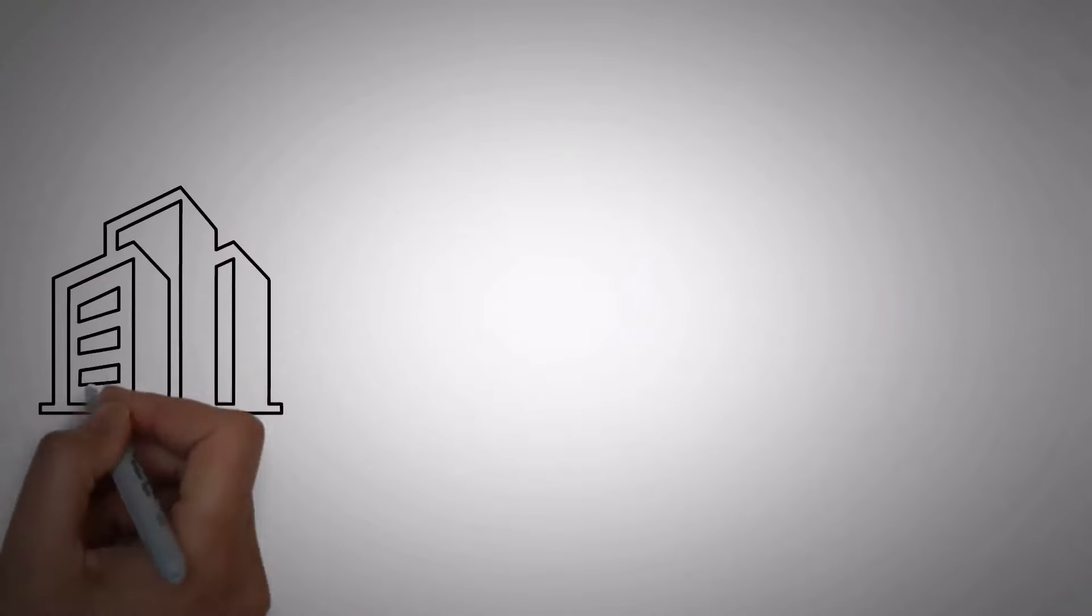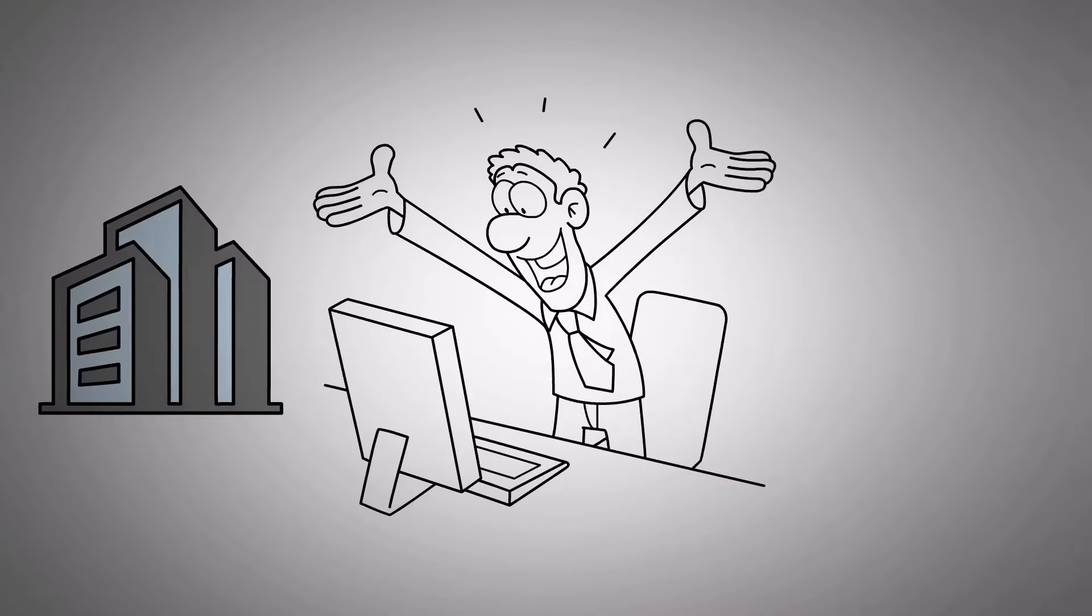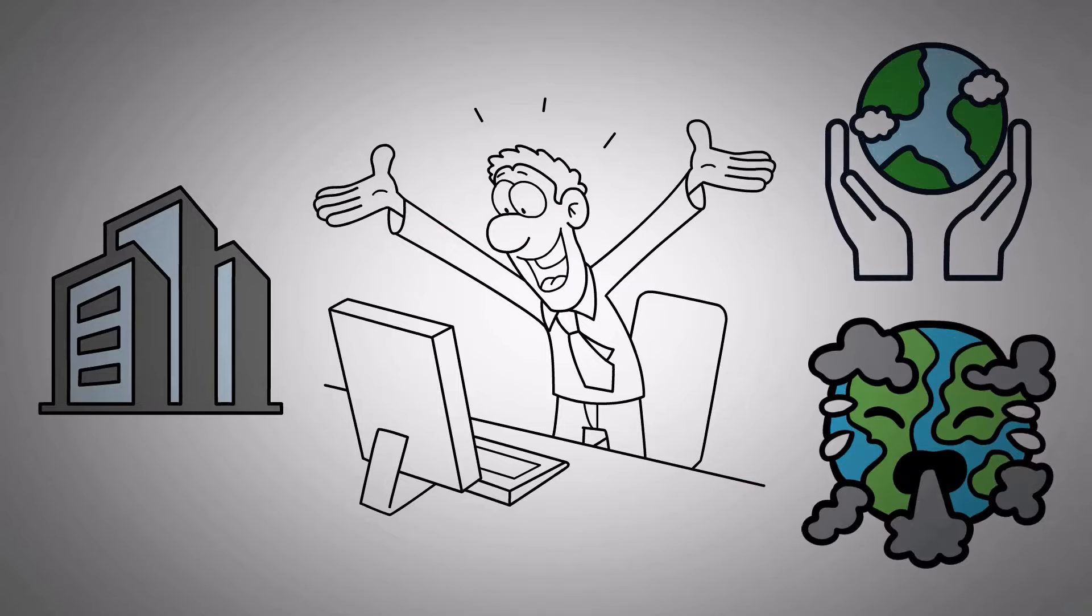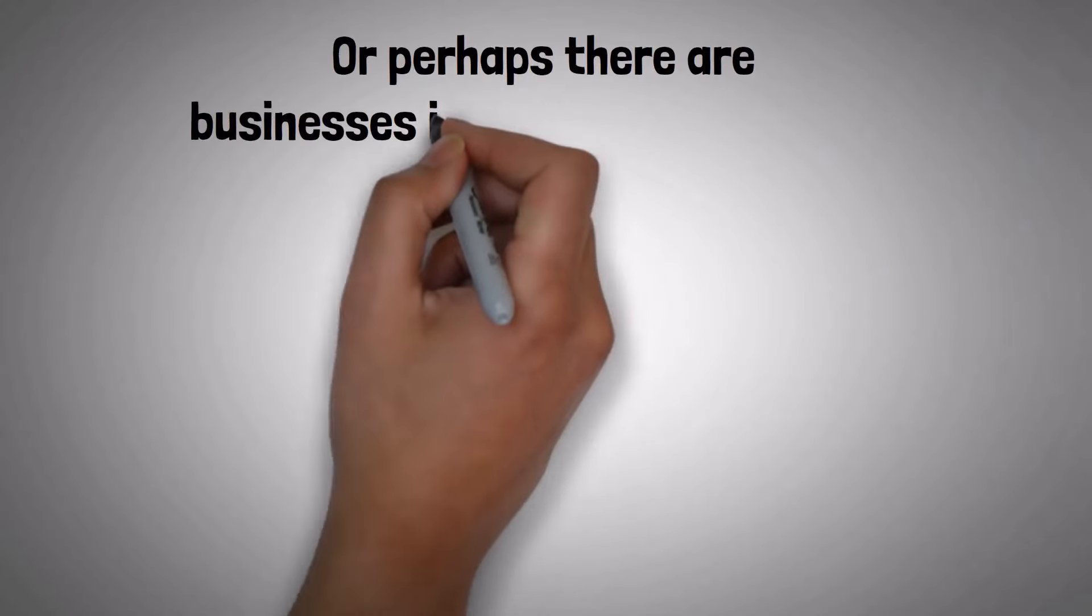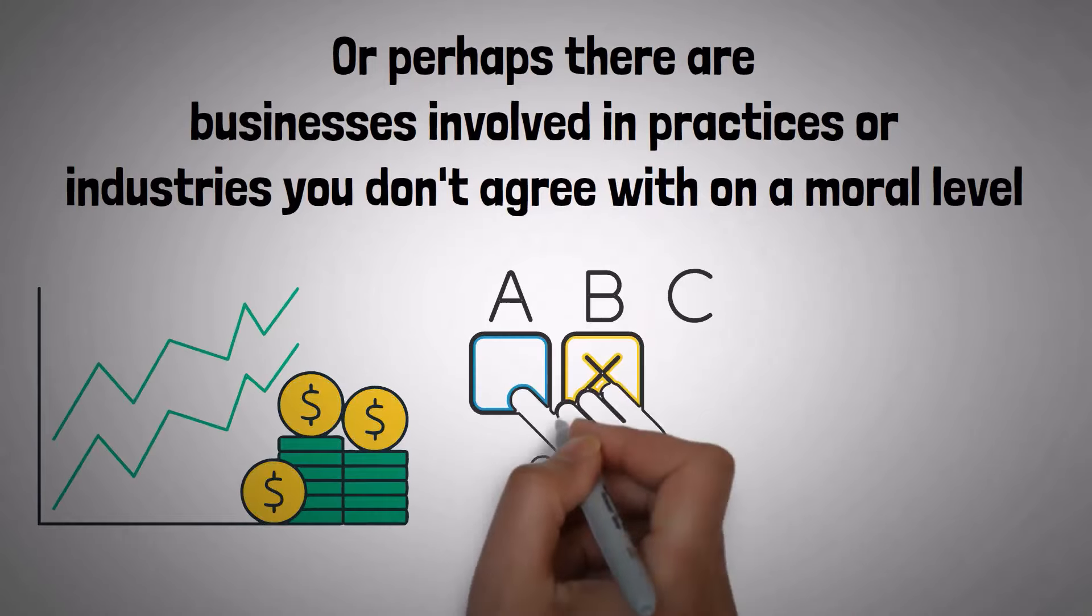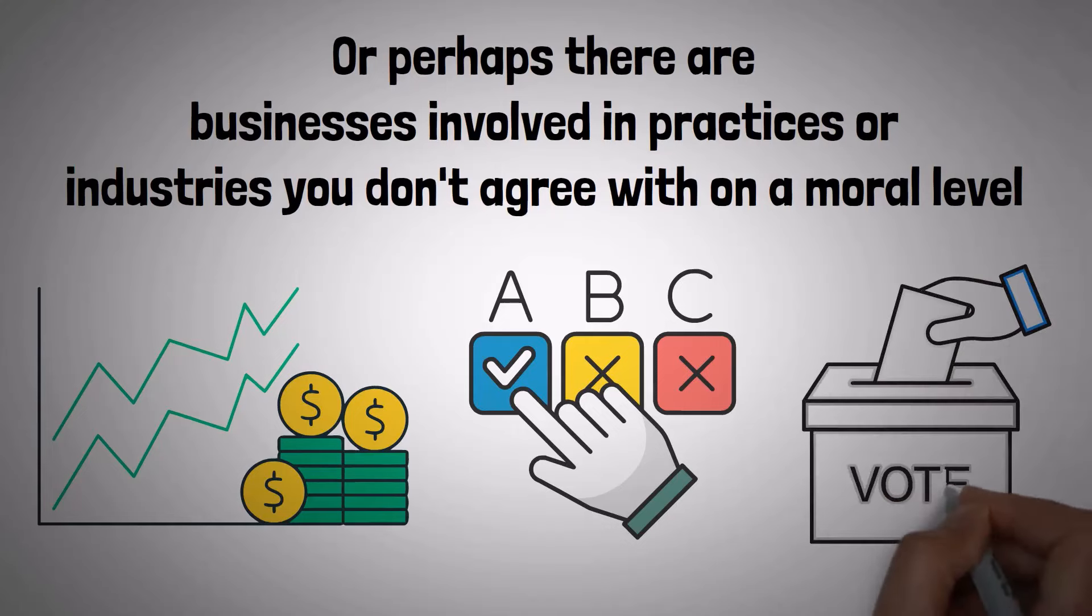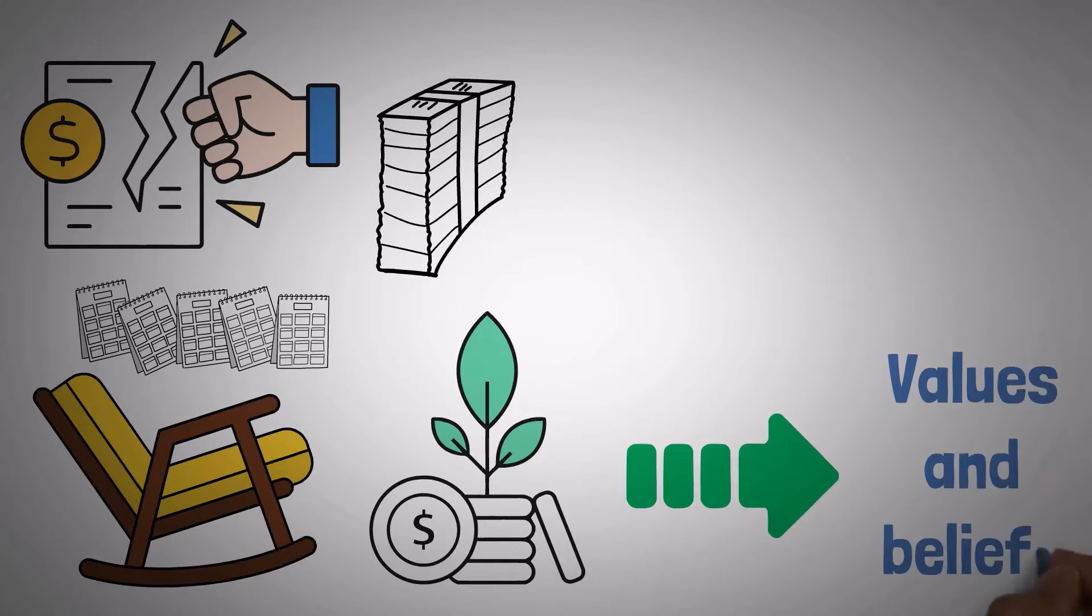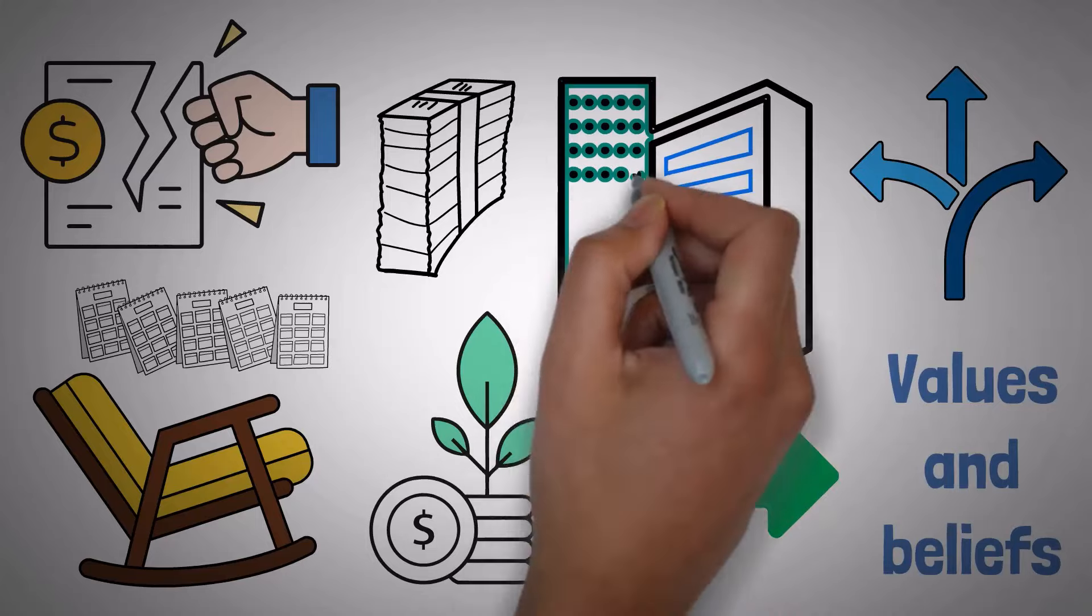On the flip side, there might be companies in that index that you're not too thrilled about supporting. Maybe you're all about protecting the environment, and there's a company in there that's notorious for pollution. Or perhaps there are businesses involved in practices or industries you don't agree with on a moral level. With an index fund, you don't get to pick and choose. You're essentially voting with your dollars for every company in the mix, for better or worse. This lack of control over your holdings can be a real deal-breaker for those of us aiming for early retirement through savvy investing. It's about more than just making money. It's also about aligning your investments with your values and beliefs, and having the flexibility to back the companies you truly believe in.